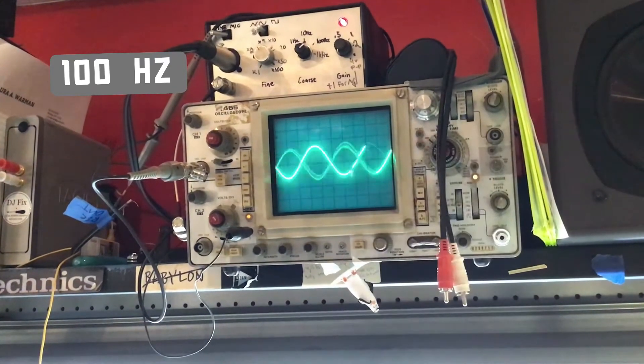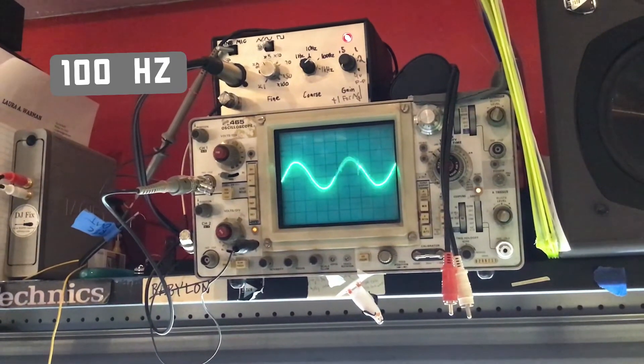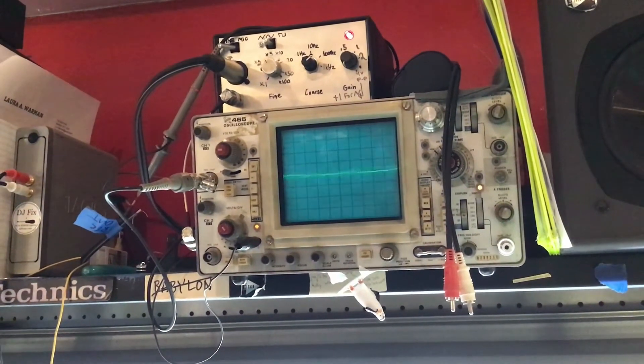100 cycles. 100 hertz. So 100 hertz is usually when you adjust a bass control. Traditionally, the bass control will do most of its magic around 100 hertz.